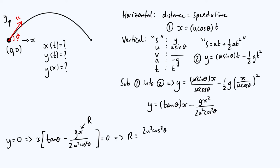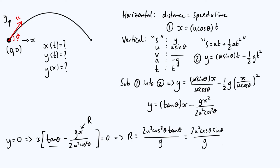We can simplify this further because cosθ·tanθ = sinθ, so the numerator reduces to 2u²·cosθ·sinθ, with g on the bottom. We can then apply the trig identity 2·cosθ·sinθ = sin(2θ), which lets us rewrite the whole expression as R = u²·sin(2θ)/g. That's our simplified expression for the range of a projectile experiencing no air resistance.